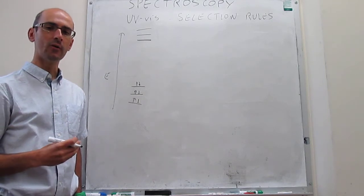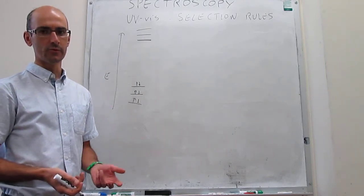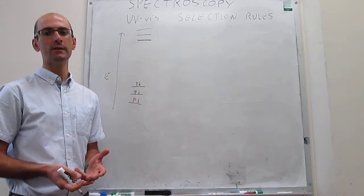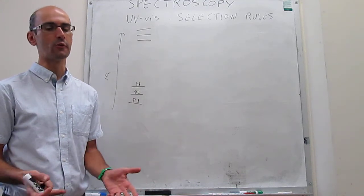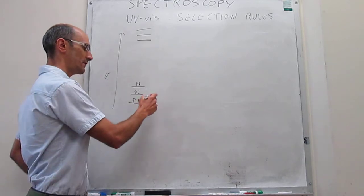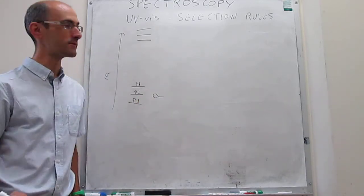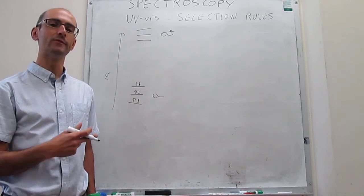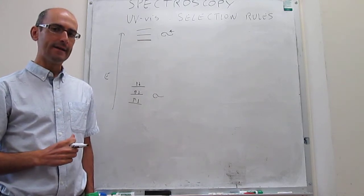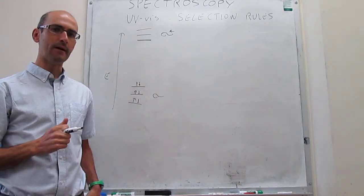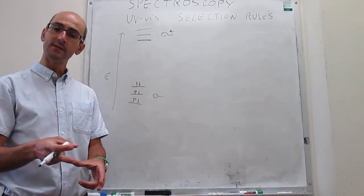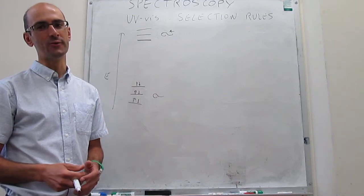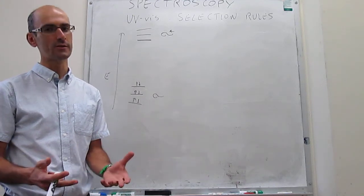Talking about the selection rules, we ask the question of what is the gross selection rule and what is the specific selection rule. The gross selection rule is very simple for UV-Vis. It turns out that every single molecule absorbs. If you have a covalent bond, you're always going to have at least sigma bonding orbitals and sigma star anti-bonding orbitals, so you can always promote that transition. This is a problem because your sample will have some transitions, but the solvent in which you're dissolving your sample will also have transitions, and the walls of the cuvette will also have transitions.